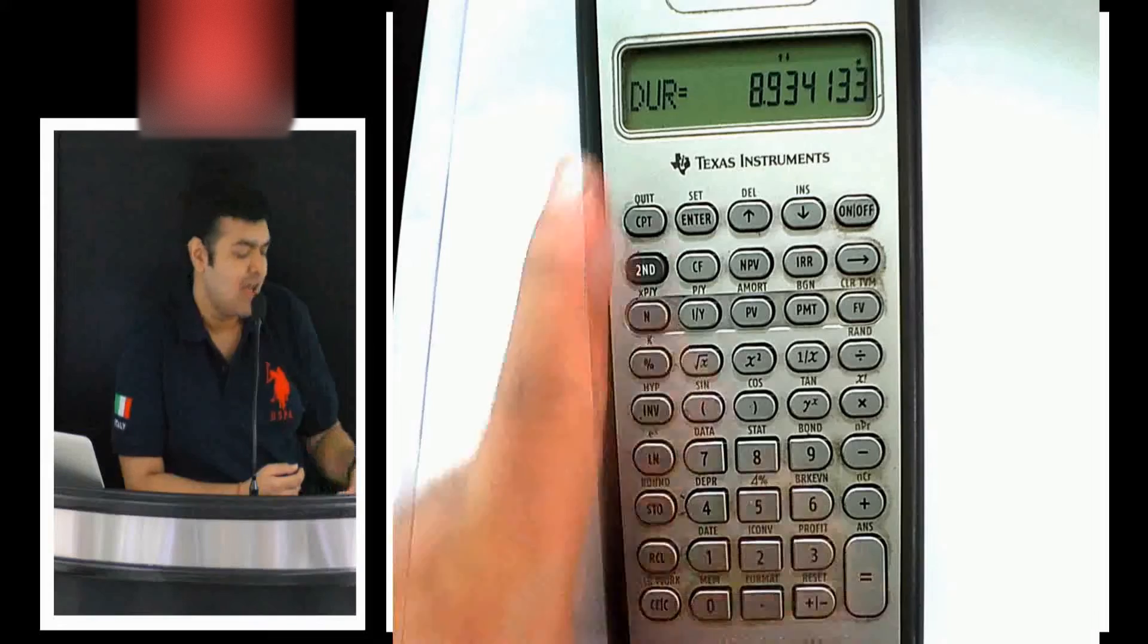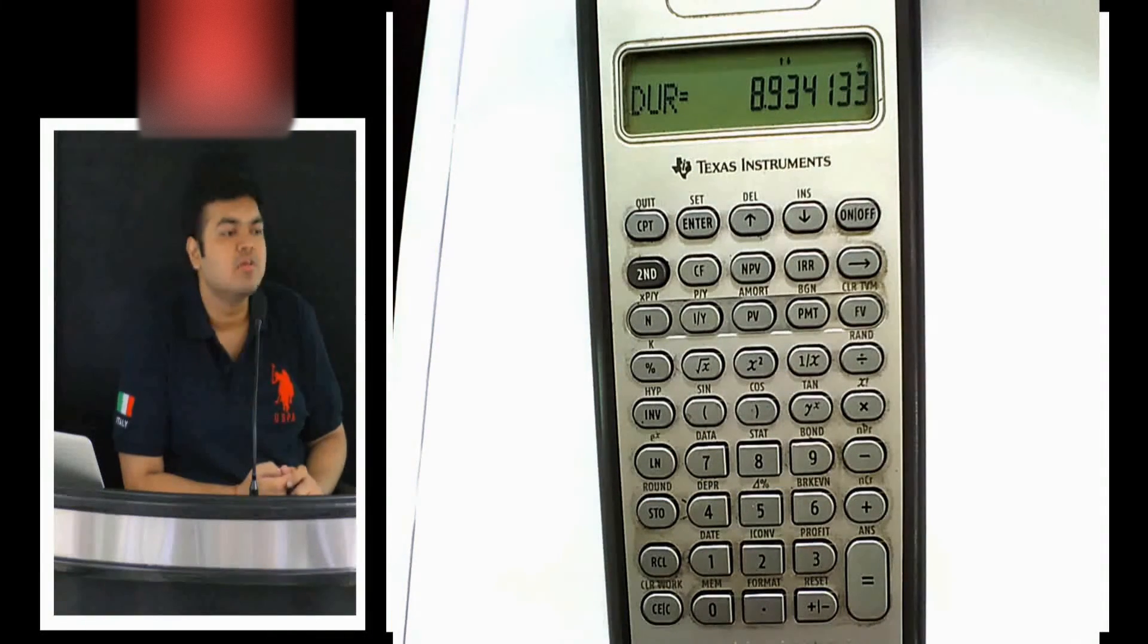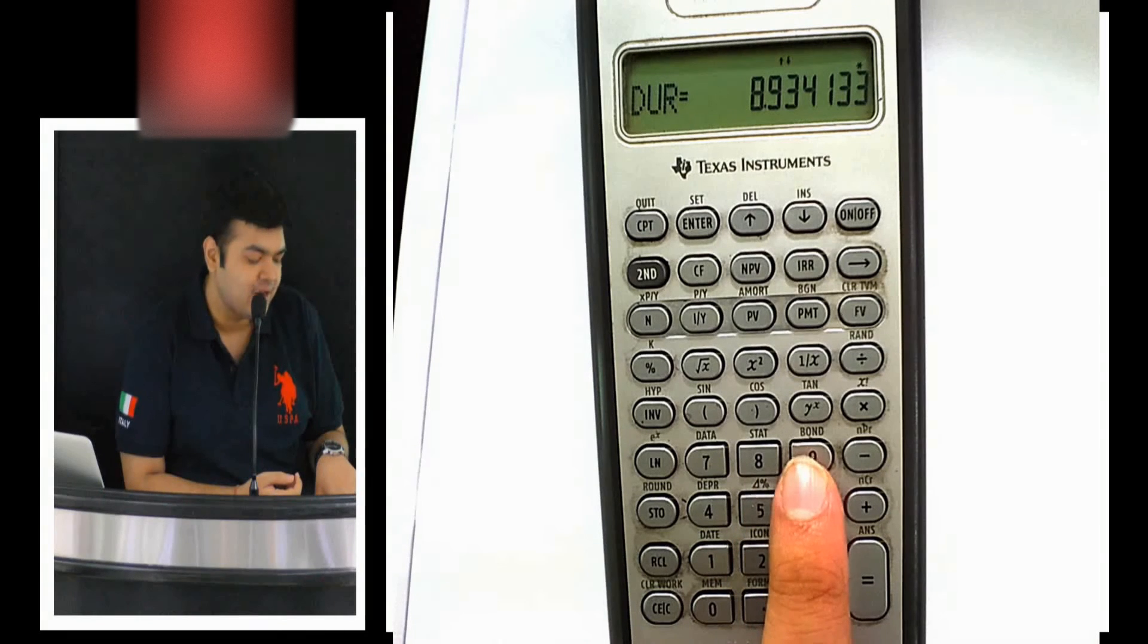There is something called duration which you'll study later. The duration gets computed automatically in the bond. Duration will be covered in the fixed income section and gets automatically calculated for you.